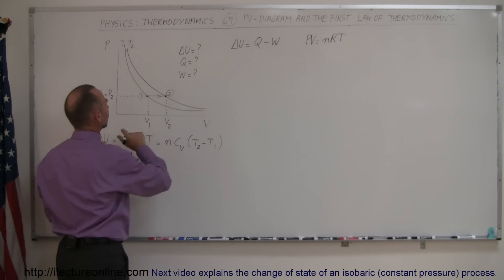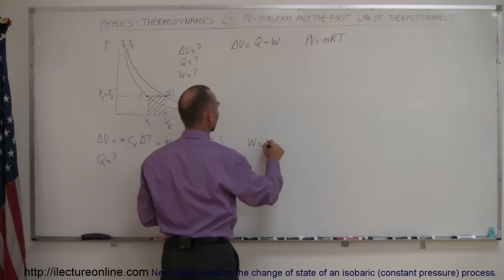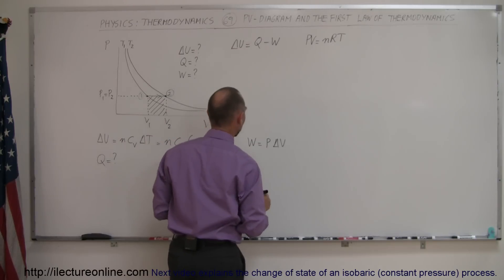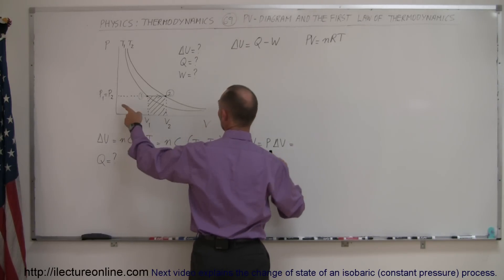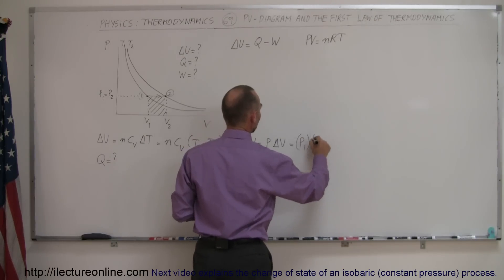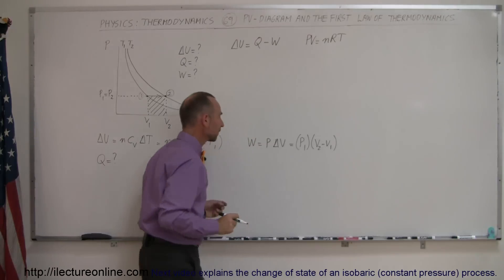We can see here that's the case where the pressure remains constant. We know that it's equal to the area underneath the curve. We can say that the work done by the gas is equal to the pressure times the change in the volume, which happens to be the area of that rectangle, and so that would be equal to the pressure, let's call it P1 multiplied times the change in volume, which is V2 minus V1.